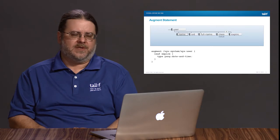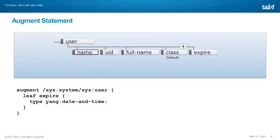Next, we have the augment statement. Augment is used to add to another data model. We have IETF standard defined models, other standard bodies defining Yang models, and you may have other models within your company that you can't change. If you're using the IETF interface model, everyone expects you to be using the standard model and not to have made any changes to it. However, for the purposes of modeling your system, you may want to add something to that standards-defined model. Augment allows you to do that. You can have one Yang module where you use augment statements to add data nodes to another module which you can't change.